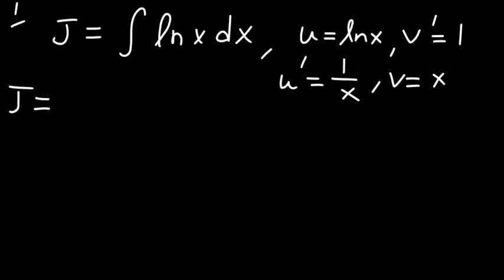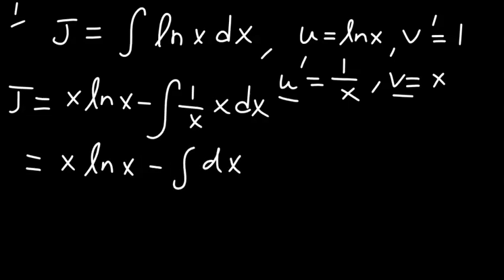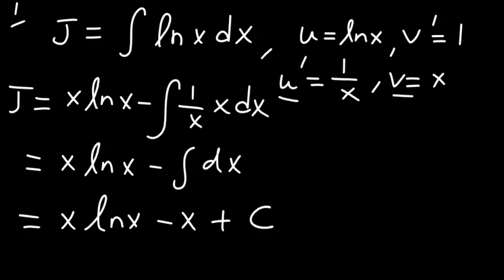So that means u prime is just 1 over x and v is just x. So the integral becomes u times v, that is the first term, x·ln(x), minus the integral of u prime times v, which is 1/x times x dx. This simplifies to just the integral of dx. So the final answer is x·ln(x) minus x plus an integration constant.